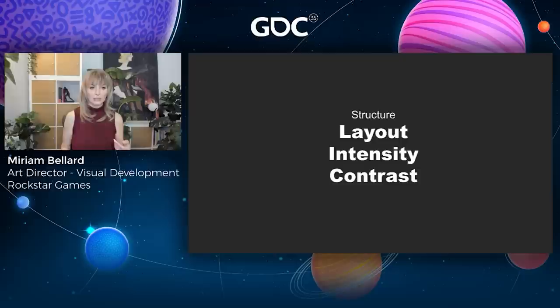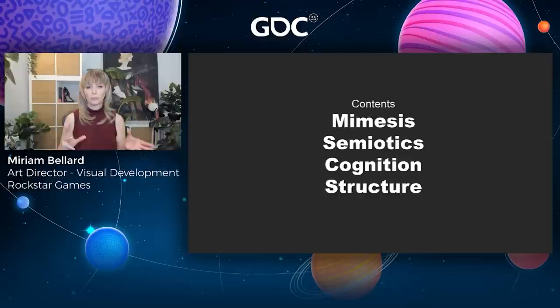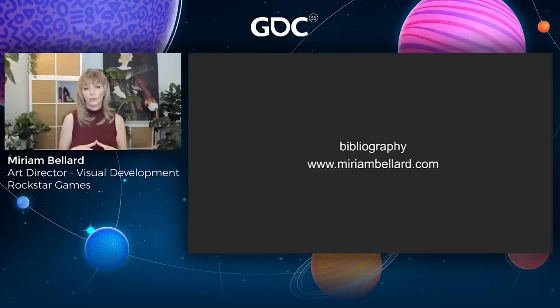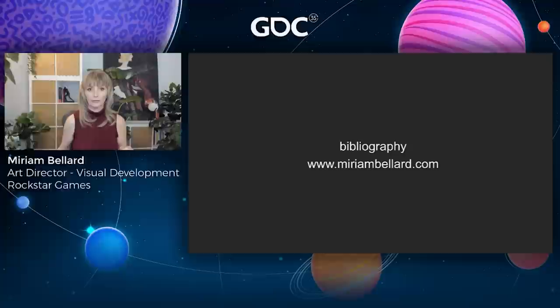To sum up the structure section: layout was about the layout of the form and the path, with the overall player experience coming from both; with intensity it's important to vary it over time; and with contrast it's important to have contrast in order to communicate to the player. To sum up the whole talk: mimesis was all about mimicking and copying reality; semiotics was all about signs, symbols, and how we communicate; cognition was about neuroscience and psychology; and we ended on aspects of structure. If you'd like to follow up, I'll be putting a bibliography on my website when this goes live. Thank you very much for listening and I hope you got a lot out of it.